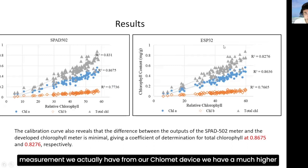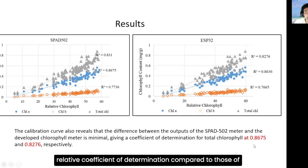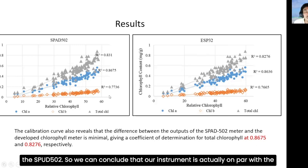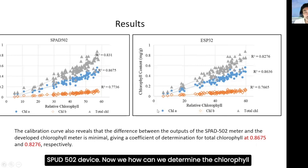The results show that Clomet achieved a coefficient of determination of approximately 0.675 for total chlorophyll, while SPAD 502 achieved 0.831. From our measurements, our Clomet device actually achieved a higher relative coefficient of determination compared to SPAD 502 in some comparisons, and we can conclude that our instrument is at par with the SPAD 502 device.